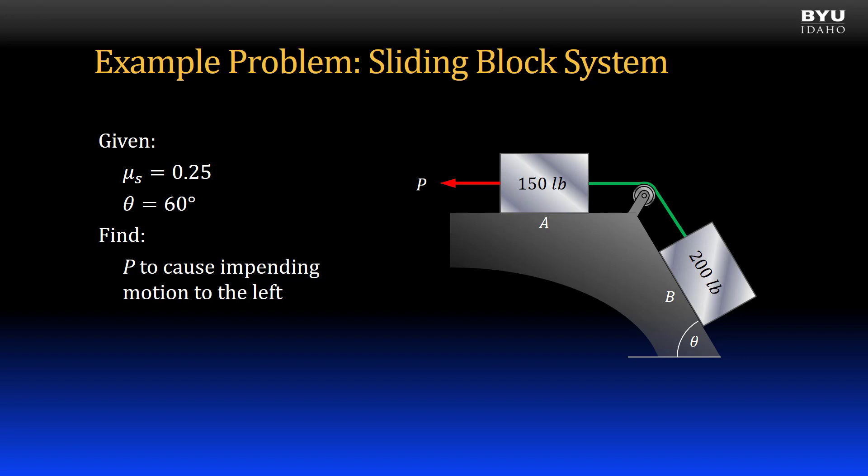They are connected by a cable across a pulley. The coefficient of static friction between the blocks and the supporting surfaces is 0.25. We want to find the force P which causes impending motion of the system to the left.